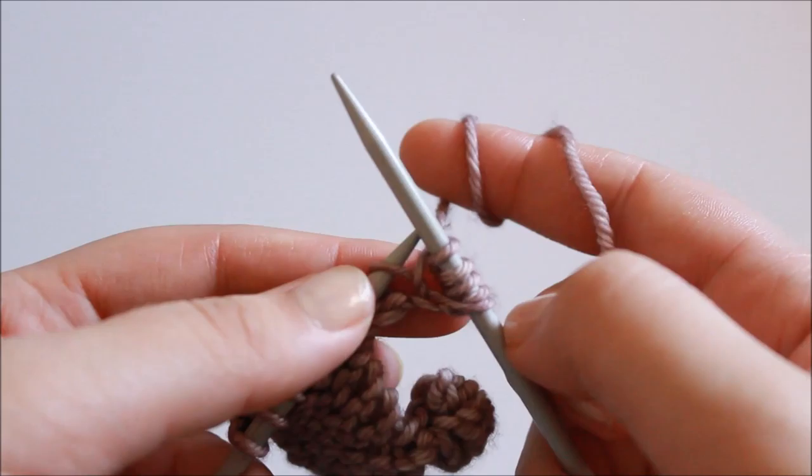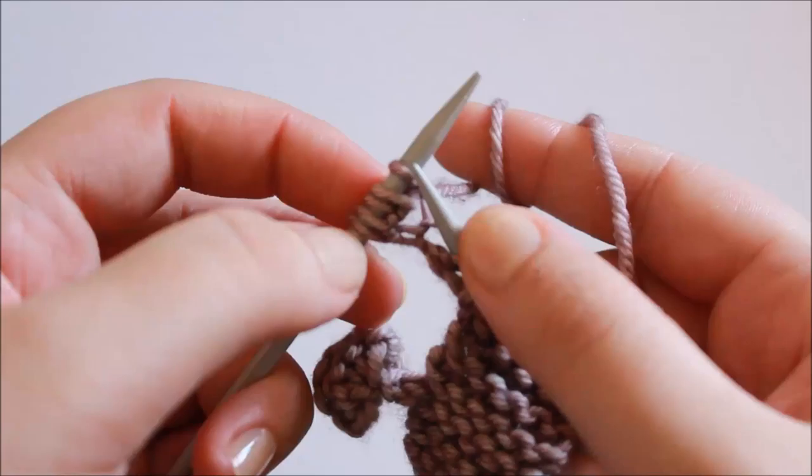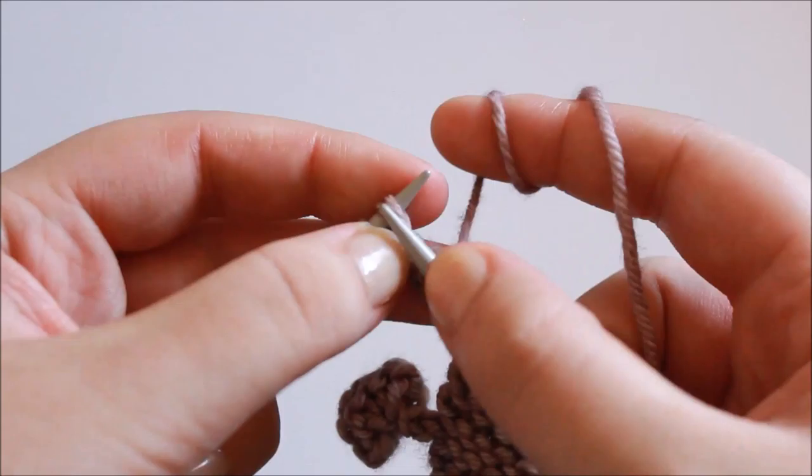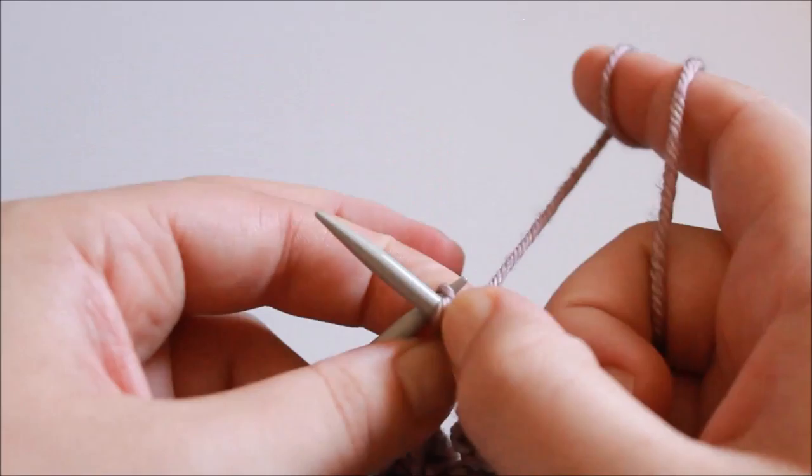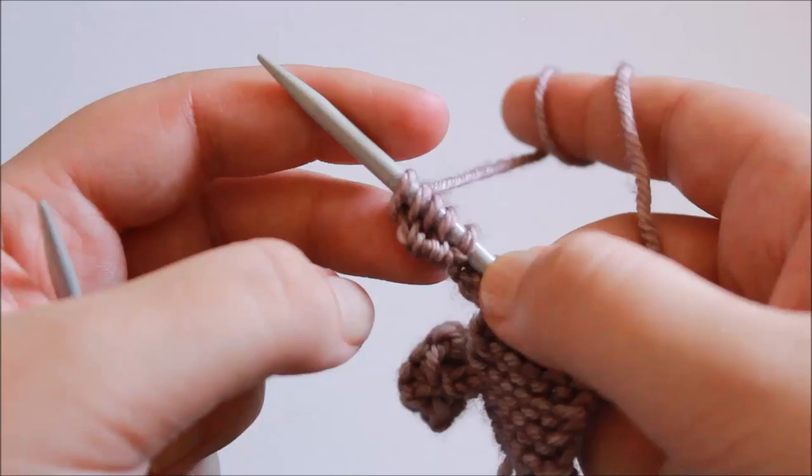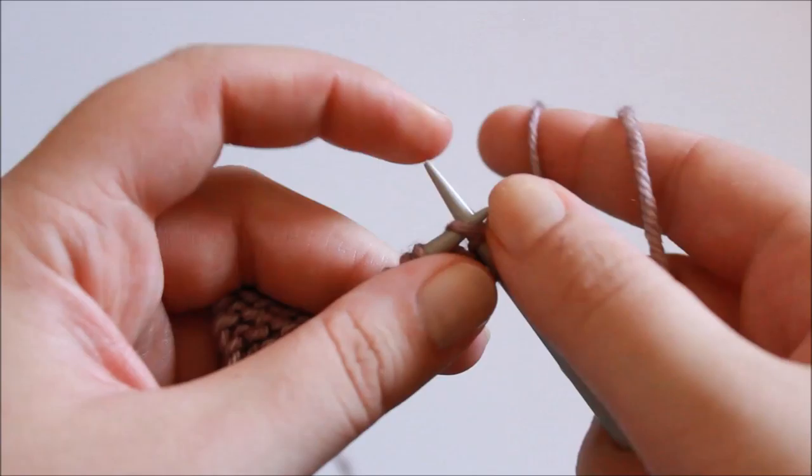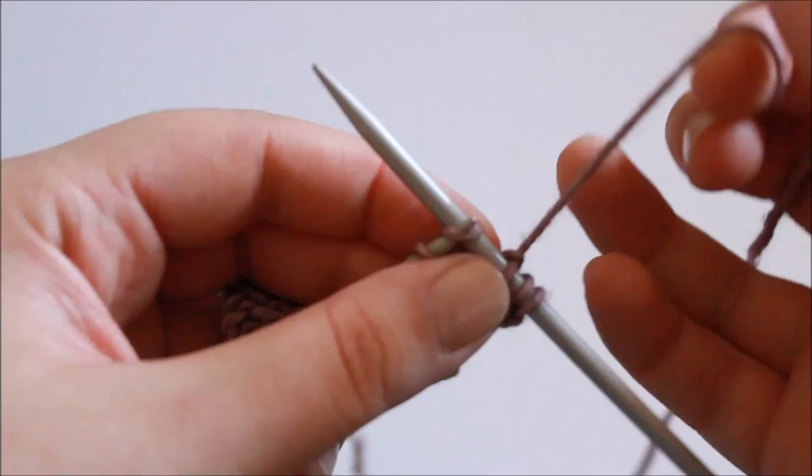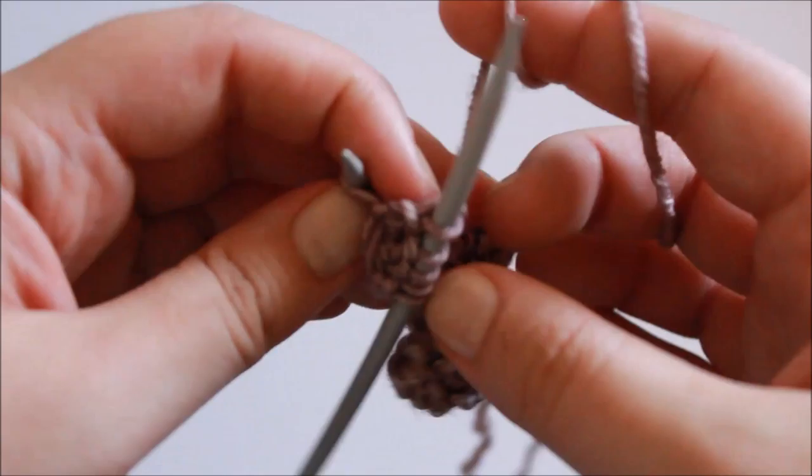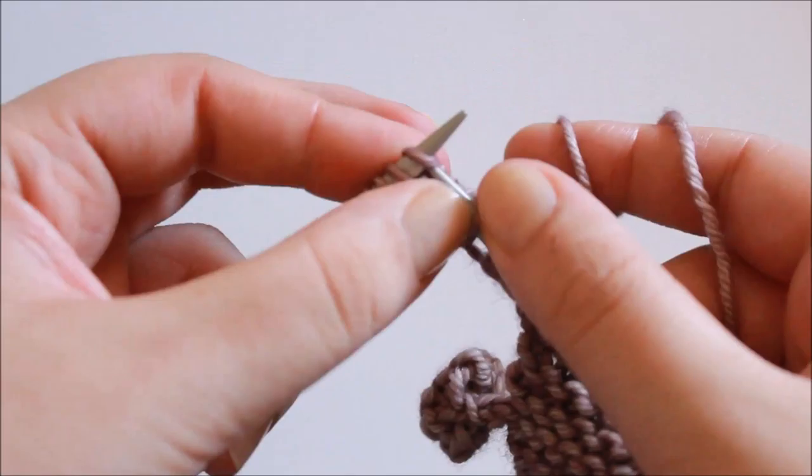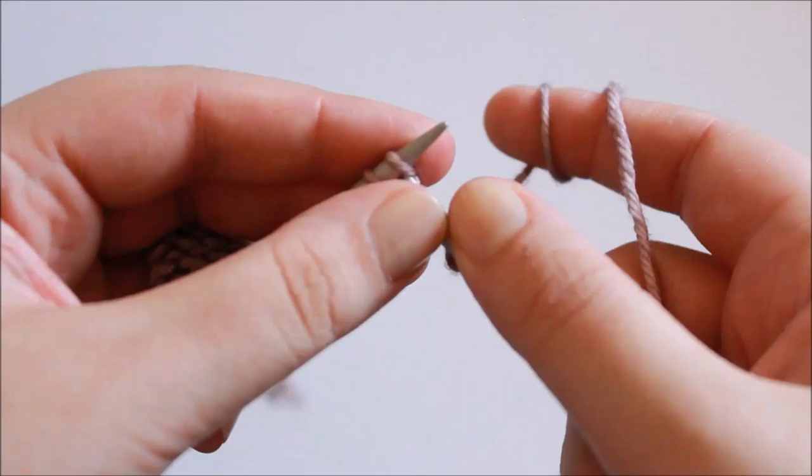Then my instructions say to turn and knit five five times. So that means turn my work and knit these five stitches. Once I've knit those five stitches once, I turn my work and knit five again, repeating this five times in total to work five rows of garter stitch across these five stitches. Turn and knit five for a third time, turn and knit five for a fourth time.